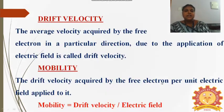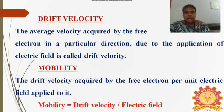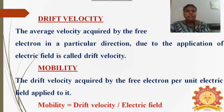Drift velocity is the average velocity acquired by the free electron in a particular direction due to the application of electric field. Such average velocity is called the drift velocity. The drift velocity term is very important while studying about the free electron.